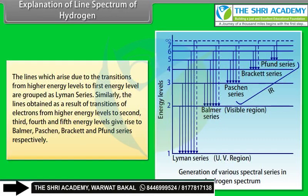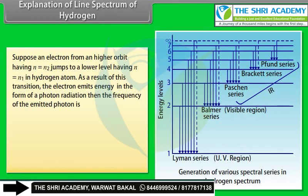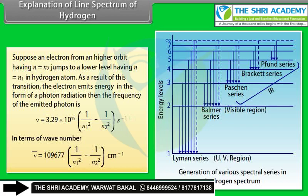Transitions to the second, third, fourth, and fifth energy levels give rise to the Balmer, Paschen, Brackett, and Pfund series respectively. For an electron jumping from orbit n₂ to lower orbit n₁, the frequency of the emitted photon is: ν = 3.29 × 10¹⁵ × (1/n₁² − 1/n₂²) per second. In terms of wave number: ν̄ = 109,677 × (1/n₁² − 1/n₂²) cm⁻¹.